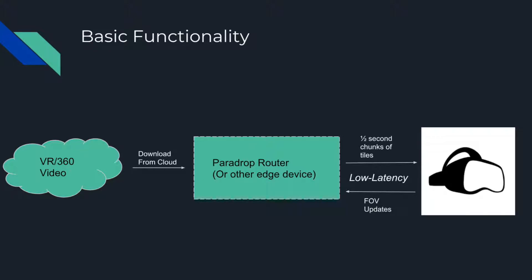You don't need to send the whole 360 video — you can send just part of it. But the problem with sending just part of it is you need to be able to ask the cloud which part you want to see in a very low latency way. And if you did this with standard cloud there'd be lag and you wouldn't always have your full view updated.